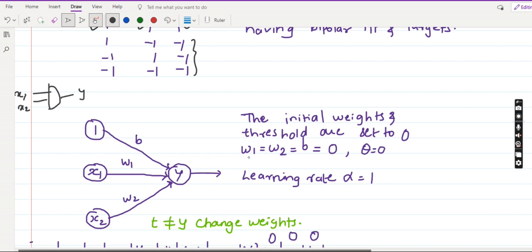Initial assumption is w1 is equal to w2 is equal to bias is equal to 0. So all the values are initially set to 0. Theta, that is the threshold, is also set to 0 and the learning rate alpha is set to 1.